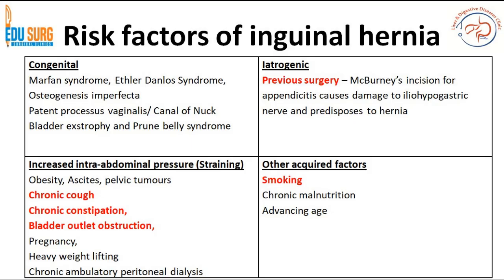The most common acquired causes seen in clinical practice include: previous surgery as an iatrogenic cause, smoking — and we know you need to stop smoking for at least four weeks before surgery — chronic cough, chronic constipation, bladder outlet obstruction due to prostatic hypertrophy, advancing age leading to muscle weakness, chronic malnutrition, heavy weight lifting and gymming, peritoneal dialysis, multiple pregnancies, obesity, ascites, and pelvic tumors.